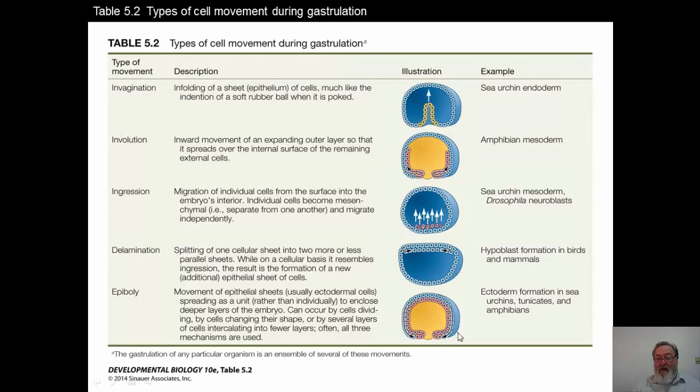And finally, epiboly. Again, this is ectoderm formation in the sea urchins. And what happens here, sea urchins and amphibians and tunicates, what happens here is the epidermis on the outside will, the cells will divide and it will continue to grow and it will encase the entire mesoderm and the endoderm that's forming on the inside. And so that's called epiboly, it's where the epidermis or ectoderm moves to surround all of the other layers, in particular the endoderm and the mesoderm and the organs that are forming from those tissue layers in the developing embryo.